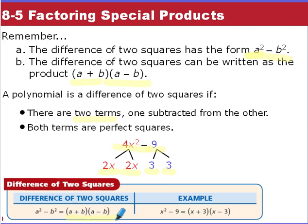When you have the difference of two squares, it breaks into (a + b)(a − b). So for x² − 9, you take the square root of x² and the square root of 9, giving you (x + 3)(x − 3). That's the difference of two squares.